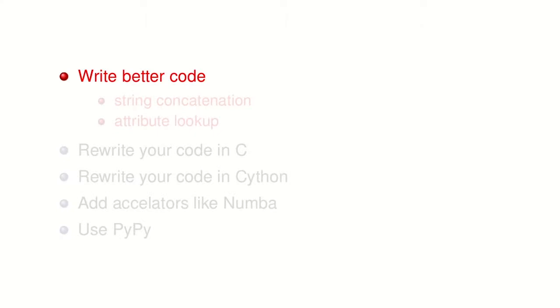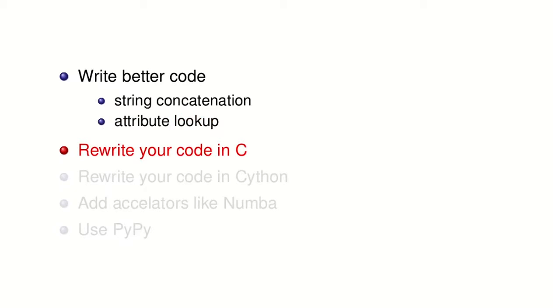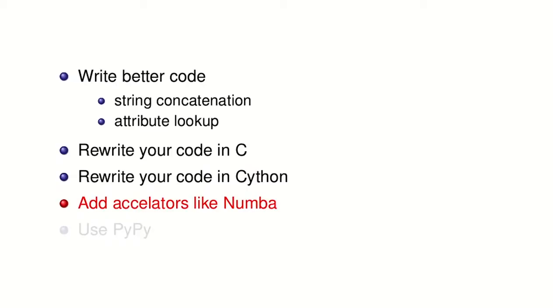The other thing we need to talk about before PyPy is: what do you do if you want your Python code to run fast? You could write better code — do string concatenation all at once with join, or take attribute lookups out of your loop. But if that's not enough, you could rewrite your code in C, or in Cython, which is a slower way to move from Python to C. You can use accelerators like Numba.